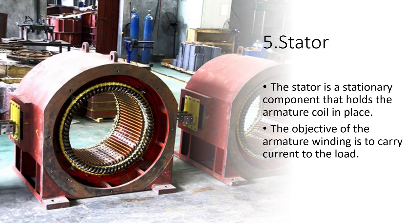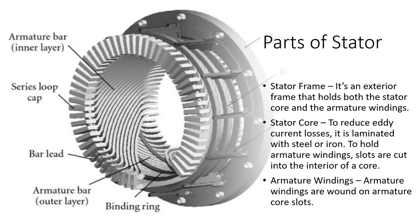Number 5: Stator. The stator is a stationary component that holds the armature coil in place. The objective of the armature winding is to carry current to the load. The stator frame is an exterior frame that holds both the stator core and the armature windings. The stator core is laminated with steel or iron to reduce current losses, and slots are cut into the interior of the core to hold armature windings, which are wound on those armature core slots.